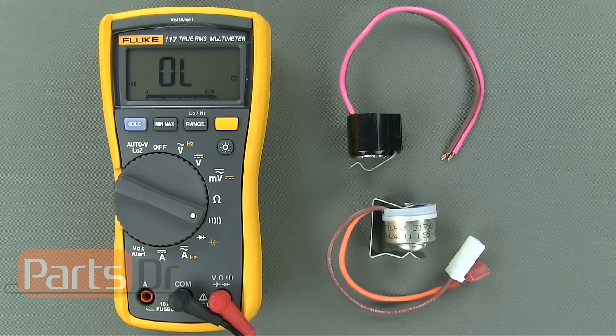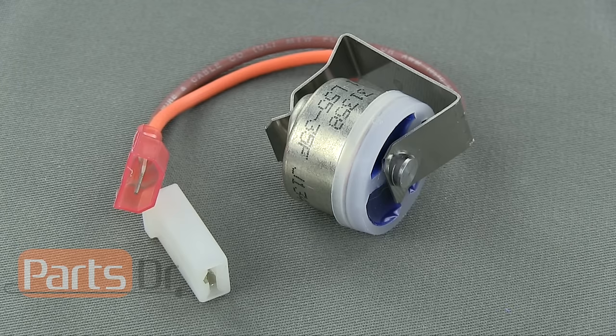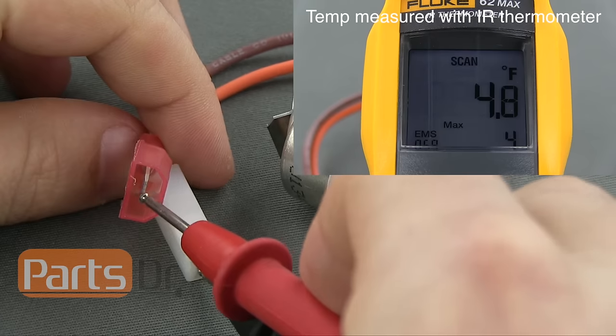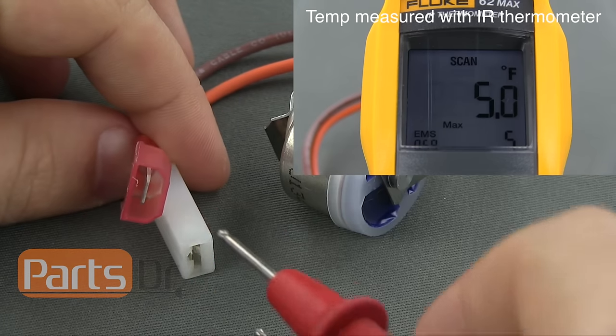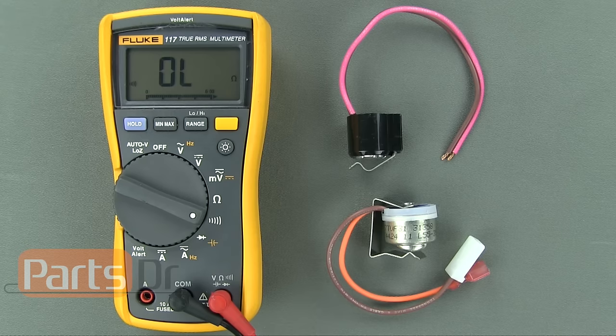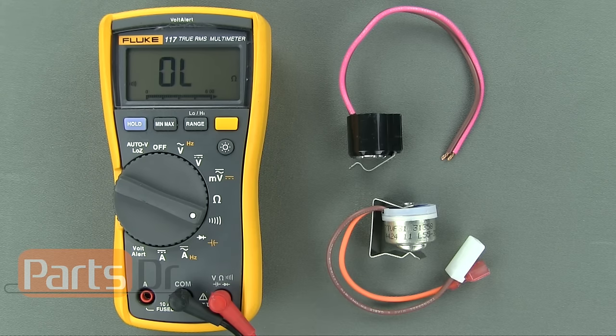Place one of each of the meter's probes on each of the defrost thermostat's wires. While the thermostat is colder than the closing temperature, the thermostat should have continuity and the meter will produce an audible beeping noise. In this case, this thermostat should be 20 degrees Fahrenheit or colder to have continuity.